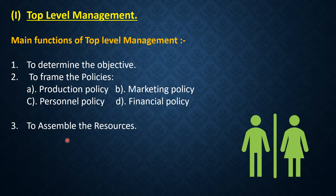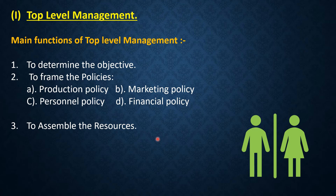Third point is to assemble the resources. Human resources, machinery, raw material, finance, and technique are arranged to achieve the objectives of the organization. This involves collecting resources and balancing the 5 M's: Man, Machine, Material, Money, and Method. Workers should be sufficient, machines should be used properly, material should arrive on time, money should be in the proper quantity, and the appropriate method for completing work should be determined.